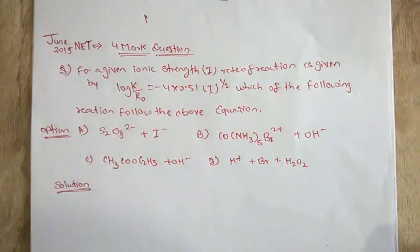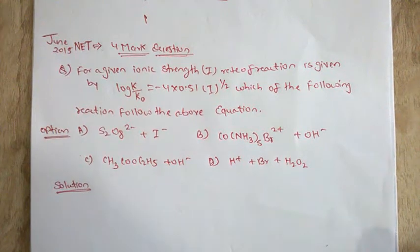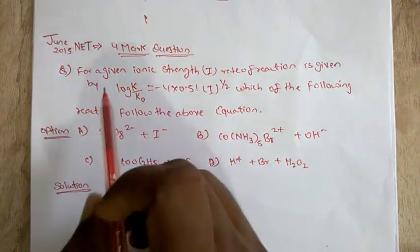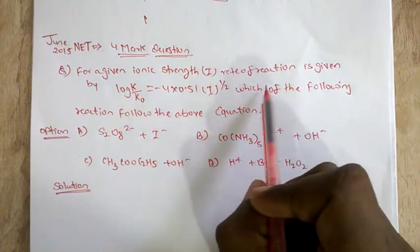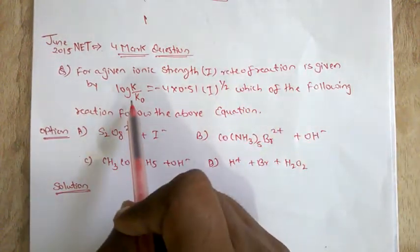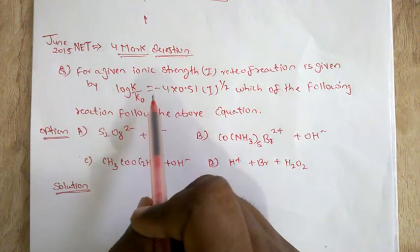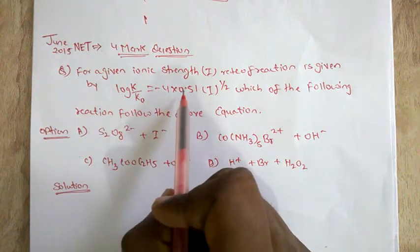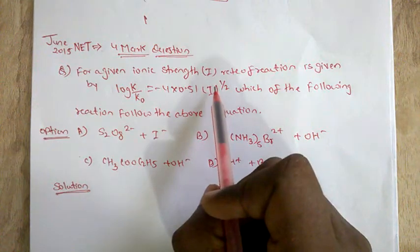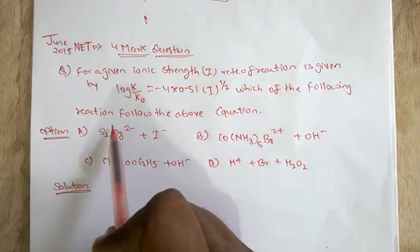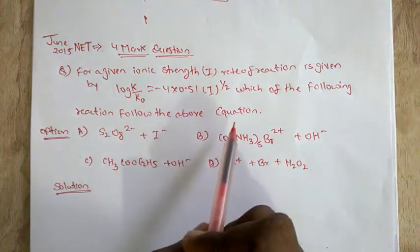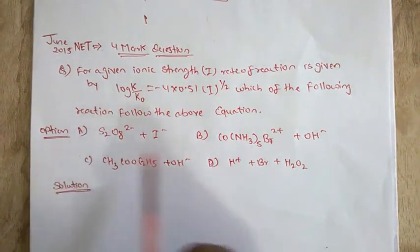Today we are going to solve the problem of NET June 2015. The question is: for a given ionic strength i, the rate of reaction is given by log k/k0 equal to minus 4 into 0.51 root i. Which of the following reactions follows the above equation?